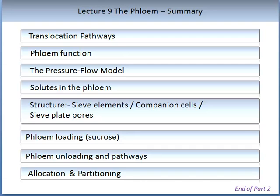After completing your recommended reading and watching the learning resource videos, you should have an understanding of the following: translocation pathways, flow and function, the pressure flow model and how it is applied, solutes in the phloem, the structure of sieve elements and companion cells as well as sieve plate pores, the role of phloem loading and unloading and associated pathways, and finally allocation and partitioning. This last topic is particularly important as it is an essential driver of productivity in agriculture. This brings us to the end of part 2 on the phloem.